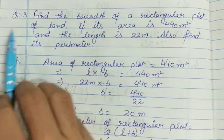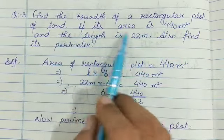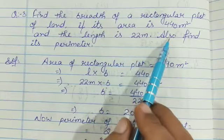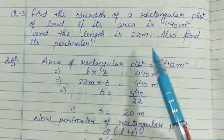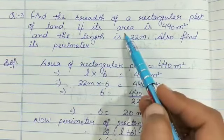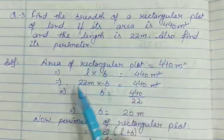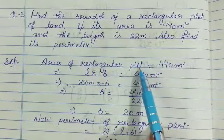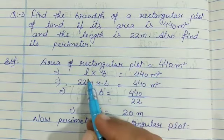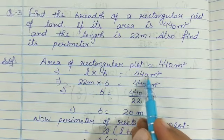Question number 3: Find the breadth of a rectangular plot of land if its area is 440 meter square and the length is 22 meters. Also find its perimeter. Now this is our rectangular plot. Area is given and length is given. We need to find breadth and perimeter. Area of rectangular plot is 440 meter square.